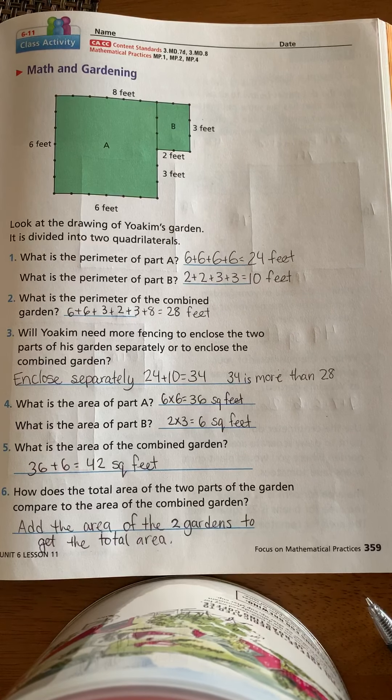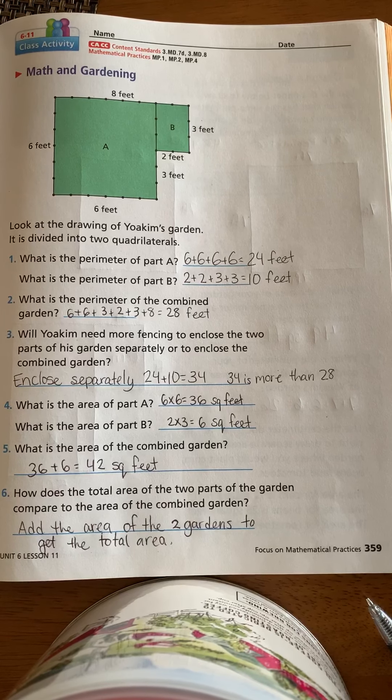Number four, what is the area of part A? Well, it's 6 times 6. So it's 36 square feet.